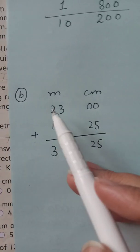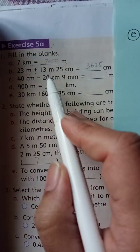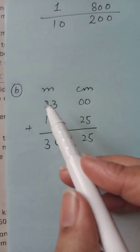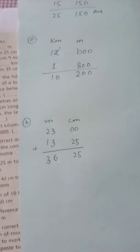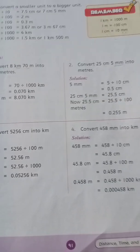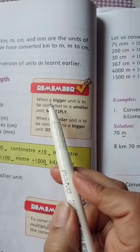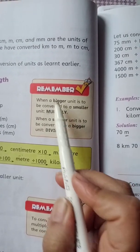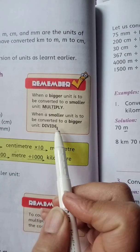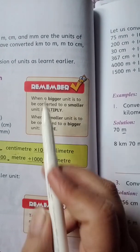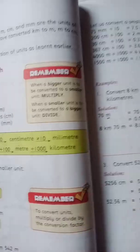Students, we write meters and centimeters in columns. Your book also has related examples — do look at them for more clarity. An important rule: when converting a bigger unit to a smaller unit, you multiply; and when converting a smaller unit to a bigger unit, you divide. Keep this in mind as these are your conversion factors.